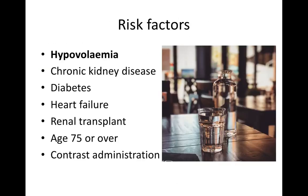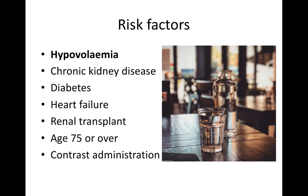In acute kidney injury there are important risk factors to look out for. The most important is hypovolemia — patients who are hypovolemic are at much higher risk due to lack of renal perfusion. Equally, a past medical history of chronic kidney disease gives an 'acute on chronic' picture. Comorbidities such as diabetes, heart failure, and renal transplants increase risk, as does being over 75. CT scans with contrast can cause nephrotoxicity, so we may avoid contrast or ensure patients are well hydrated before and after.